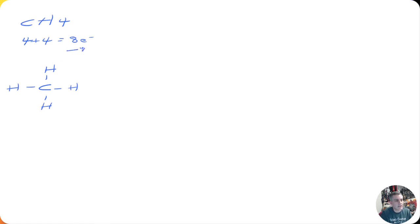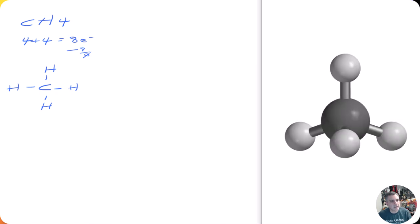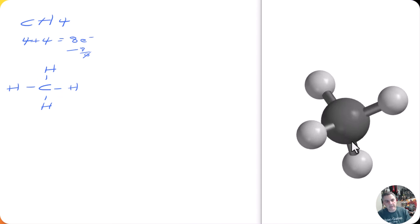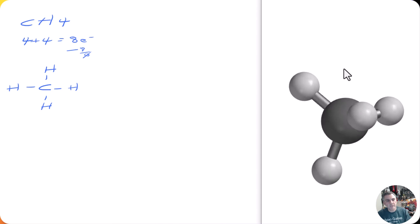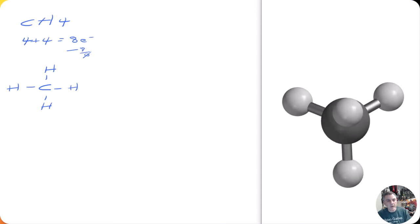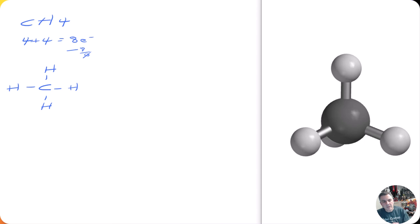We've used eight electrons — eight minus eight is zero, so we're good. I'm going to fire up Spartan, the program we're using in lab this week, in a split screen. You can see the tetrahedron: one, two, three, four bonding pairs, each line representing two electrons — four bonding pairs represented in this three-dimensional structure. You can rotate it in space and build a model.